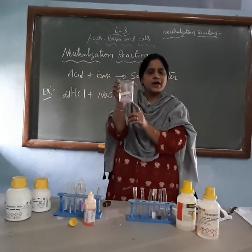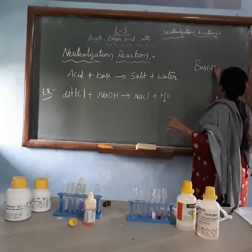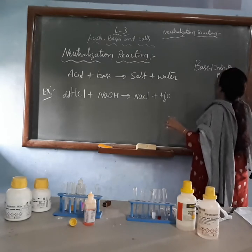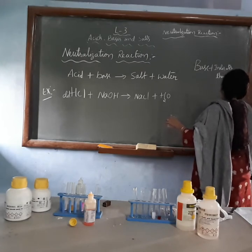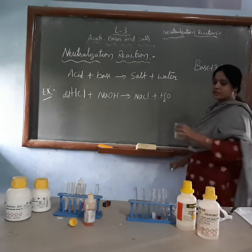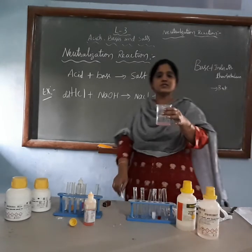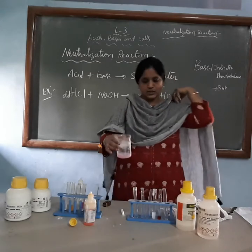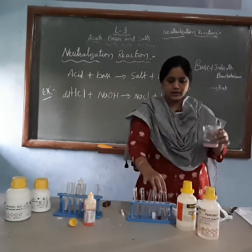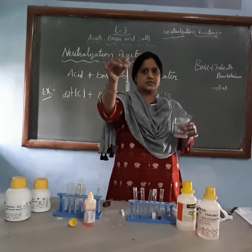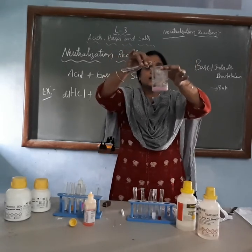Here, what you have added — you have added only base, and to this base you have added an indicator, the phenolphthalein indicator. When you add it you are getting the pink color; the solution is turned into pink color. Now what I will do — I will add a little quantity of acid to this solution. I already took dilute hydrochloric acid and I will add it drop by drop, and we will observe what changes are happening.